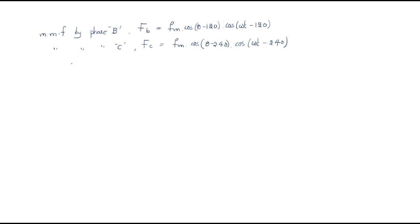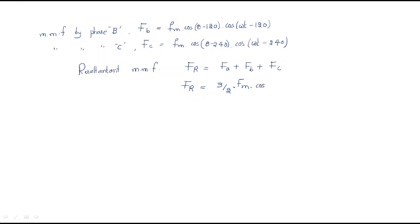The resultant MMF is the combination of all three: FR = FA + FB + FC. By adding all three MMFs and performing the calculation, we get the resultant MMF: FR = (3/2)·FM·cos(θ − ωt). This is the resultant MMF due to all three phases.